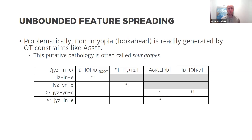Problematically, constraint-based theories — particularly agree-based theories of harmony — produce global interactions inconsistent with myopia. With a highly ranked positional faithfulness constraint protecting roots and a markedness constraint banning rounding of non-high suffixes, you're left with AGREE and IDENT to adjudicate candidates. Because the dative vowel cannot undergo harmony, you're guaranteed an AGREE violation, passing adjudication to IDENT, which prefers the faithful candidate with no spreading over partial spreading — what speakers actually do. This pathology is called 'sour grapes.'